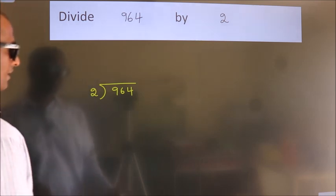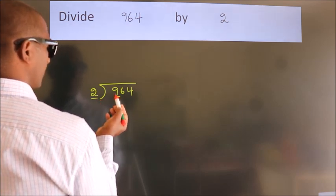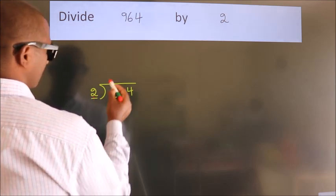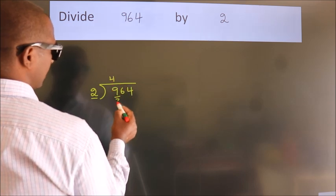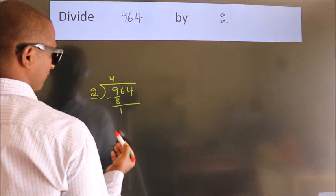Next. Here we have 9, here 2. A number close to 9 in 2 table is 2 fours, 8. Now we should subtract, we get 1.